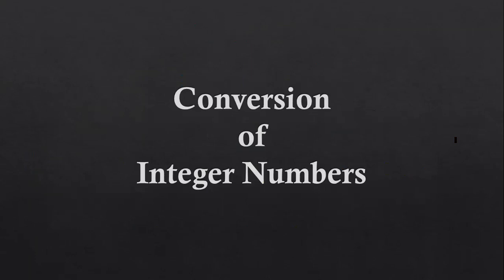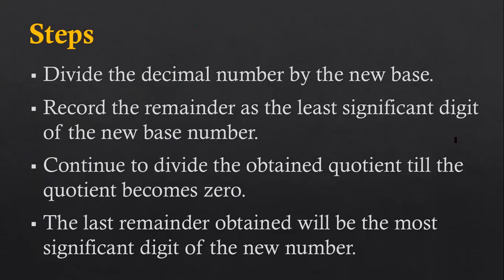First, we are going to convert integer numbers. These are the steps to follow: First, divide the decimal number by the new base. Second, record the remainder as the least significant digit of the new base number. Third, continue to divide the obtained quotient till the quotient becomes zero. And last, the final remainder obtained will be the most significant digit of the new number.